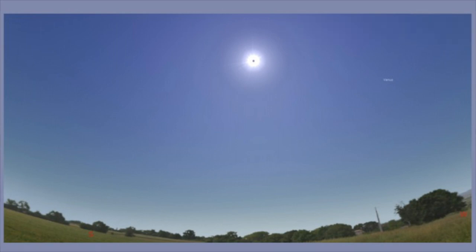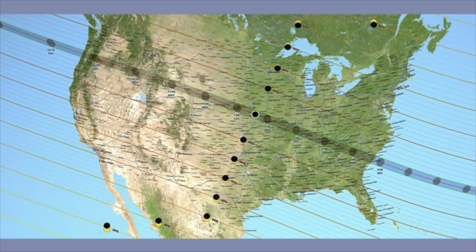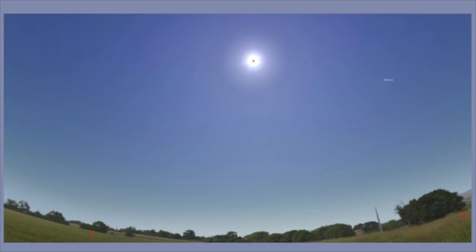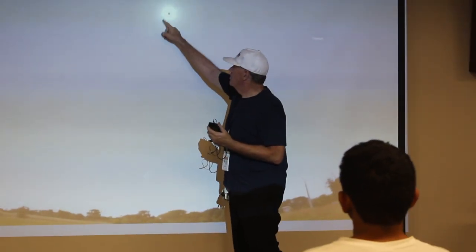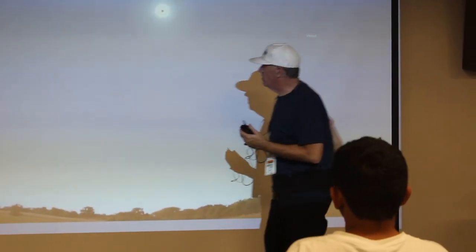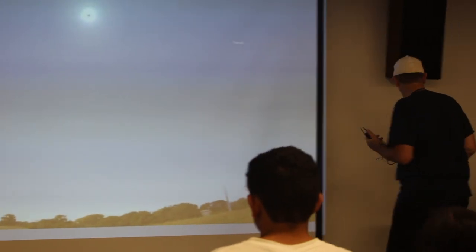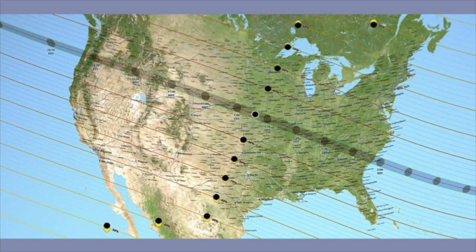This is the sun at maximum eclipse today — what it would have looked like in a perfectly clear sky. The planet Venus is off to the right here, and here's the moon sitting in front of the sun.